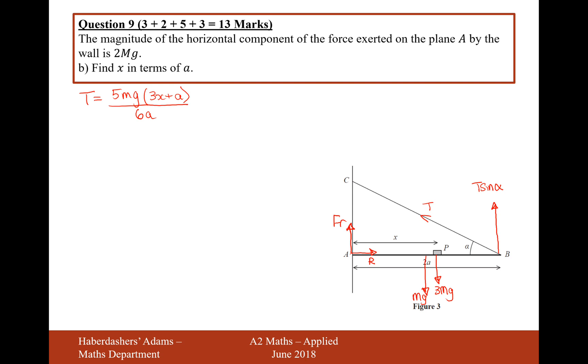Okay, so moving on to part B. The magnitude of the horizontal component of the force exerted by the plane A and the wall, by the wall, is 2 mg. So, that's this reaction force here. What I'm talking about by this reaction force here is that this pole, this rod, is being pushed into the wall. That's how it's effectively being kept in position. And the reaction force of the wall back onto the rod is R. So, the horizontal component there is R. And what they're referring to in this question here is that that force there is equal to 2 mg.